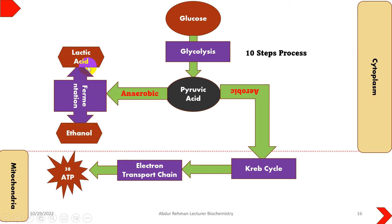If it is an anaerobic pathway, it will lead to the fermentation process and result in lactic acid production or ethanol production. If it leads to the aerobic process, then it will be converted into acetyl-CoA, which will enter the mitochondria where it will go through the Krebs cycle or TCA cycle, and then through the electron transport chain, resulting in the production of ATP, which is the ultimate need of the body.